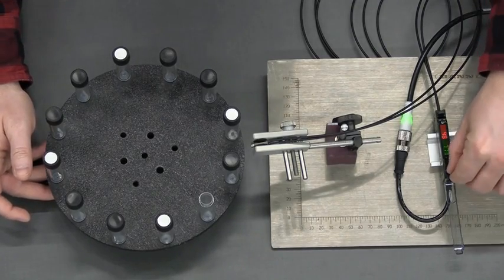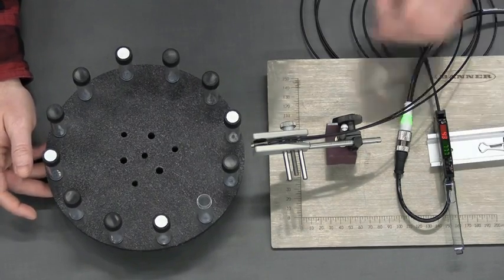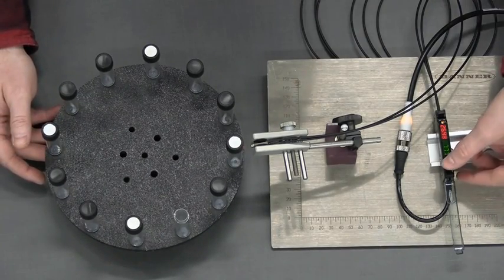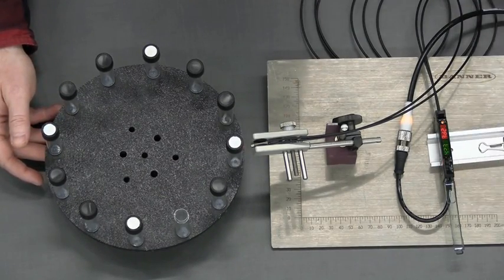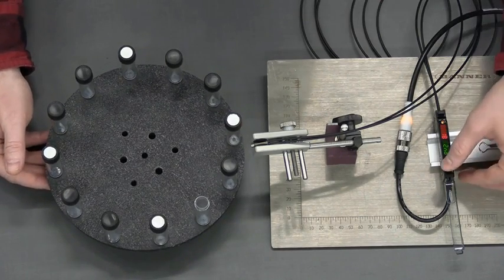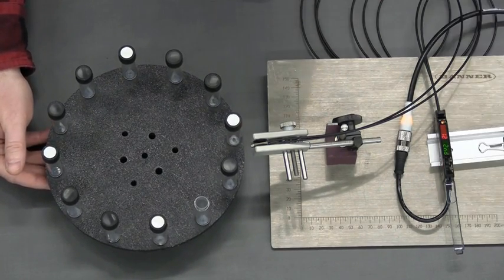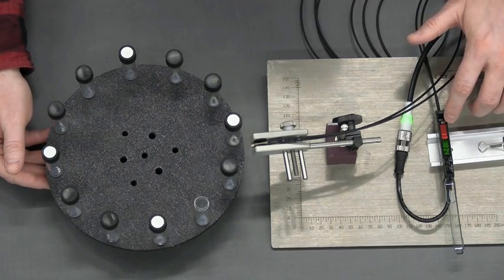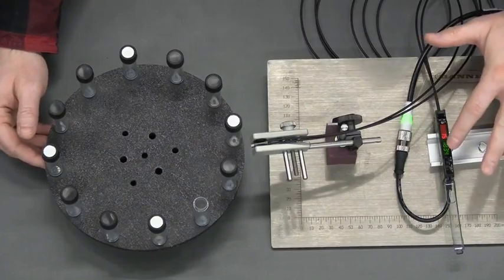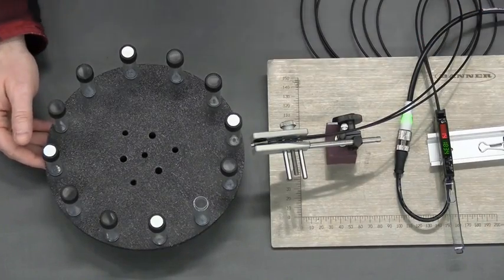To teach, you slide the slider to the adjust mode, and then present the first condition. Whether that's light or dark, doesn't matter. Then you click in on the rocker switch. Then you present the second condition, and click in on the rocker switch again. You'll see that the amplifier determines the middle point of those two conditions right here, and sets the threshold there.